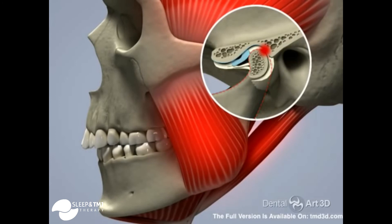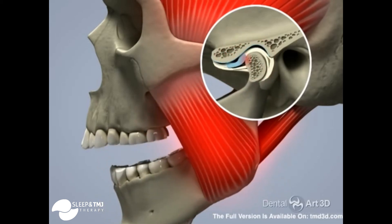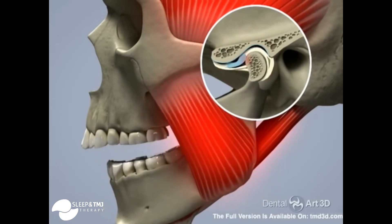The joint becomes deformed and the ligaments of the joint become damaged. As a result, the TMJ disc can get trapped in front of the condyle. While the click may go away, limited mouth opening will occur.